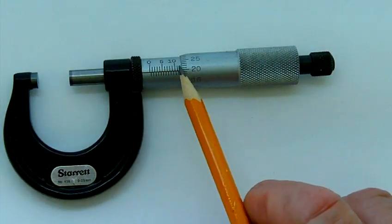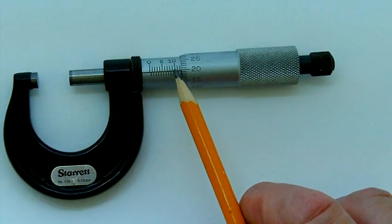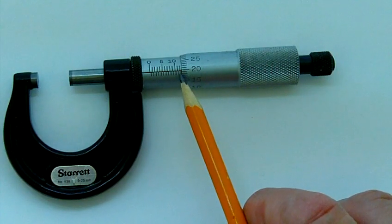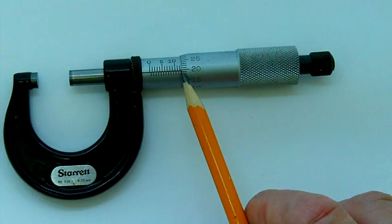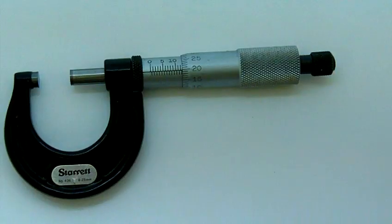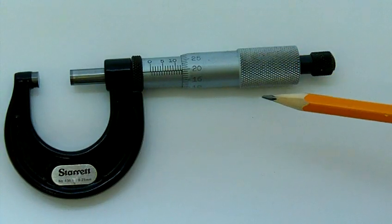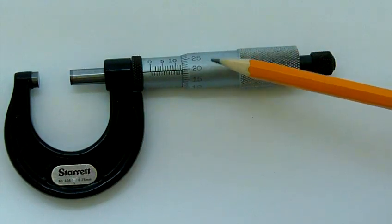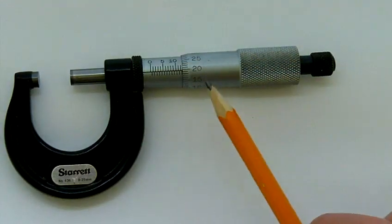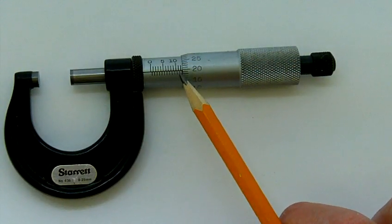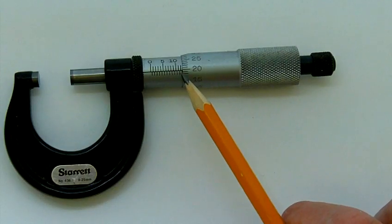So if we look at the sleeve, I'm seeing the 10 millimeter mark, 10 and a half, 11, 11 and a half, 12. I can just see the 0.5 millimeter line exposed. So the answer should be 12.5 on the main scale, 12.5 millimeters.